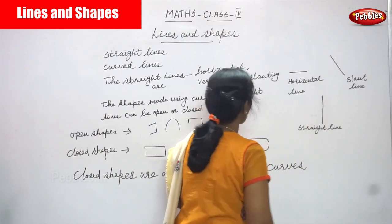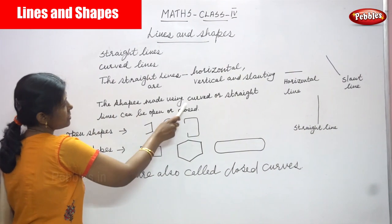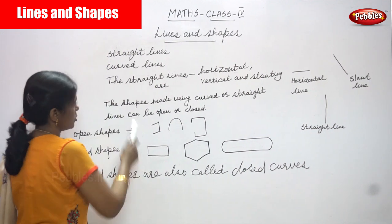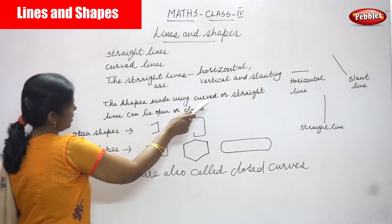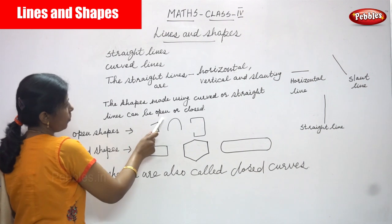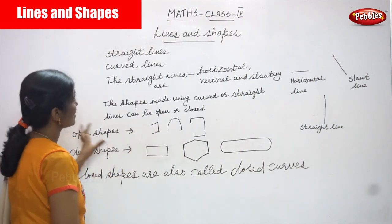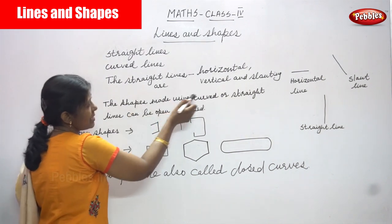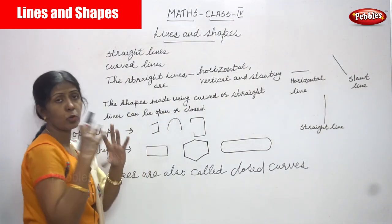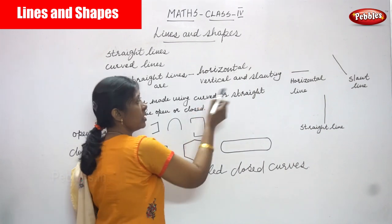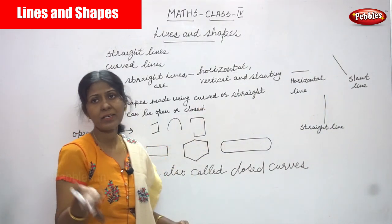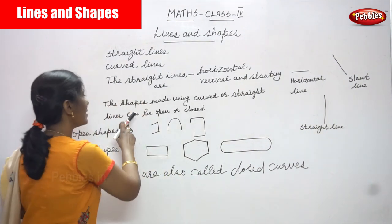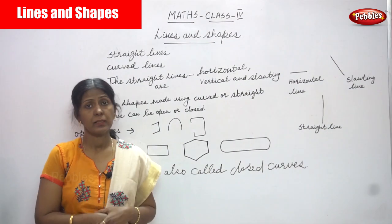Shapes are made using curved or straight lines and can be open or closed. So if you want to draw a shape, we have to use either a curved line or a straight line. The shape may be an open or a closed shape.